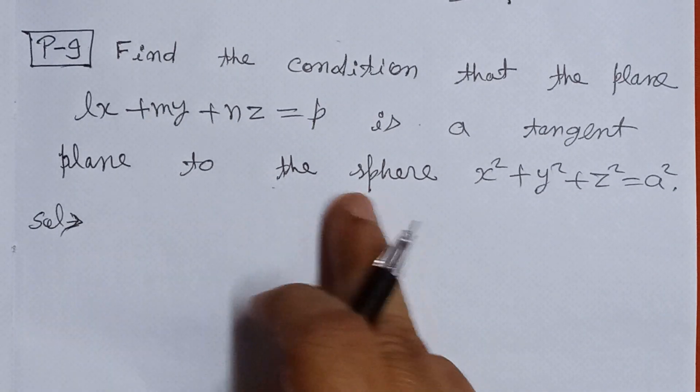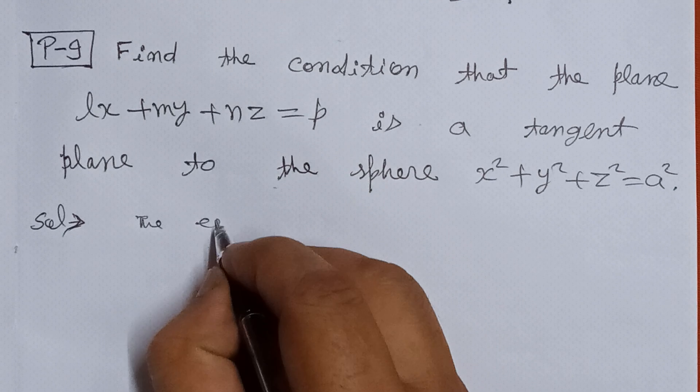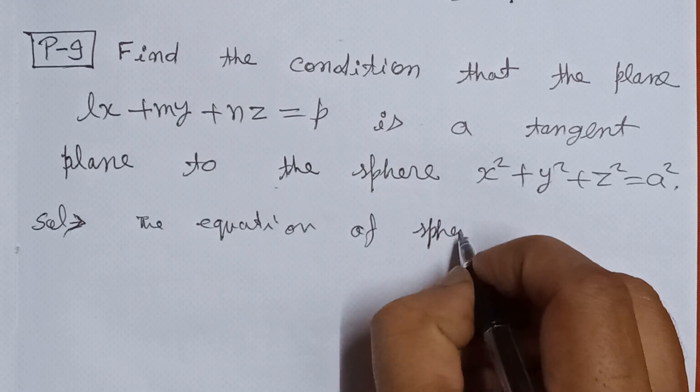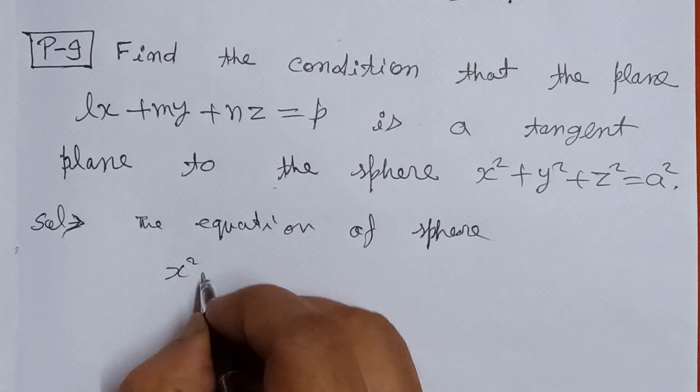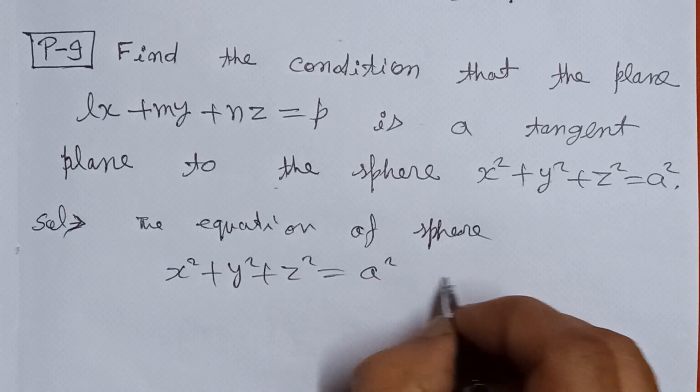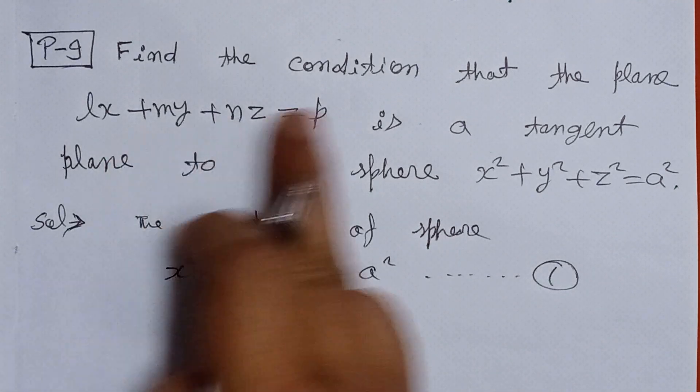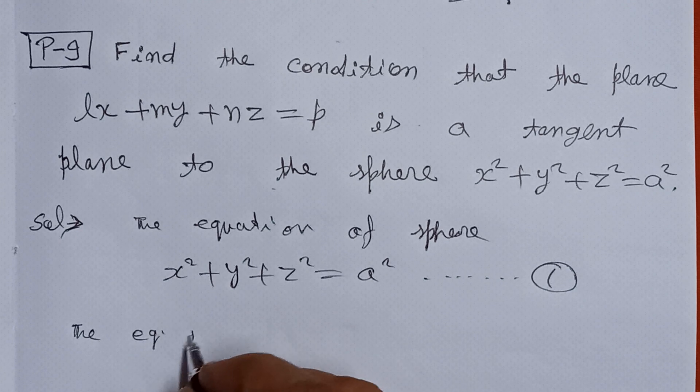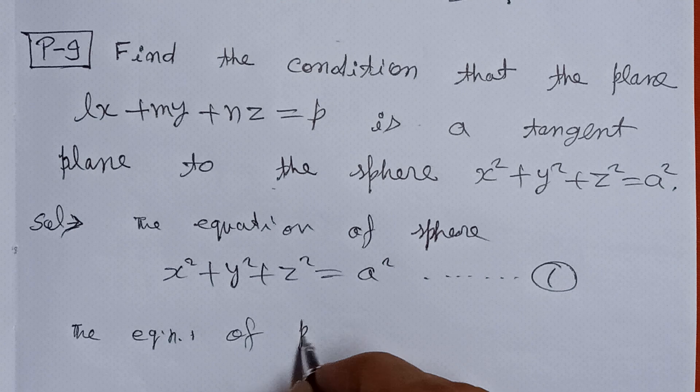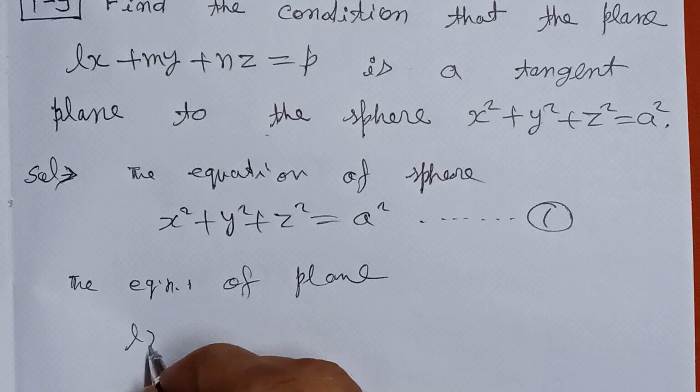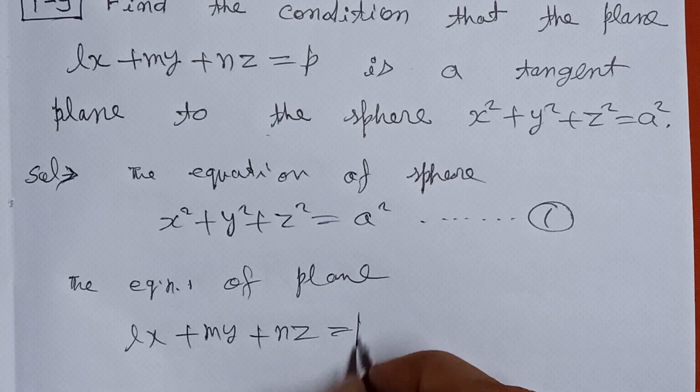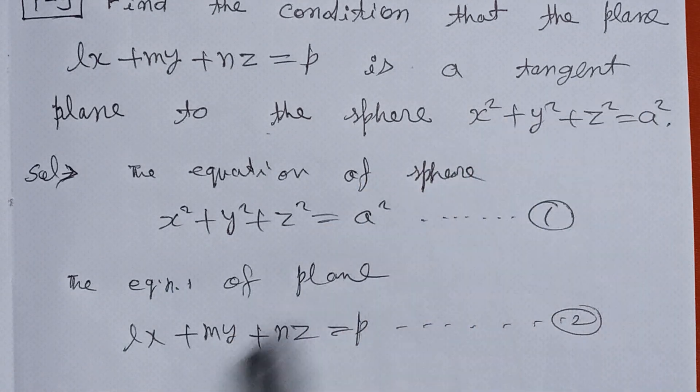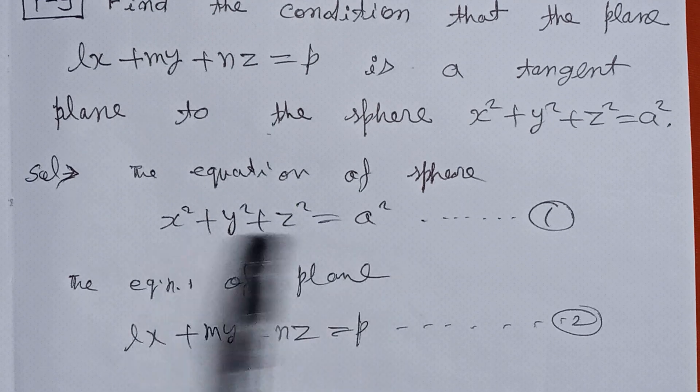First of all, I write the given equation of sphere. The sphere equation is x² + y² + z² = a². I write it as equation number 1. And the given plane equation is lx + my + nz = p. This is equation number 2.